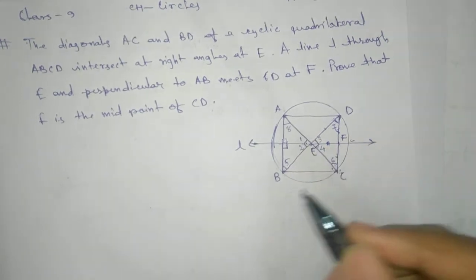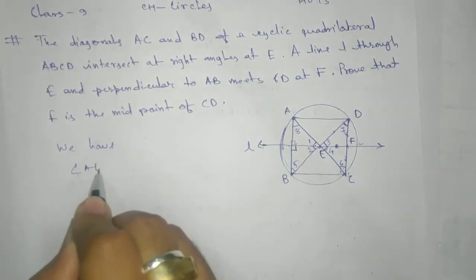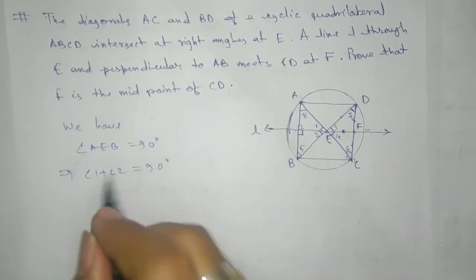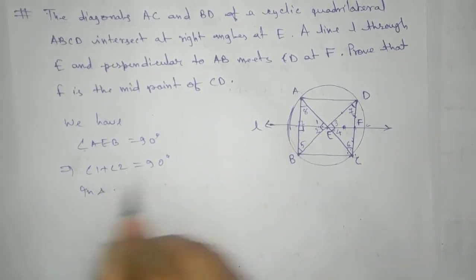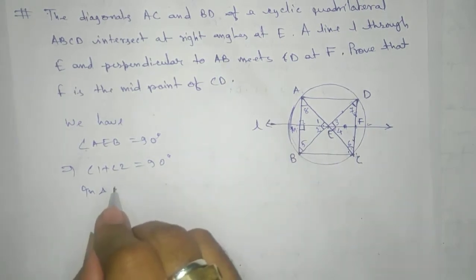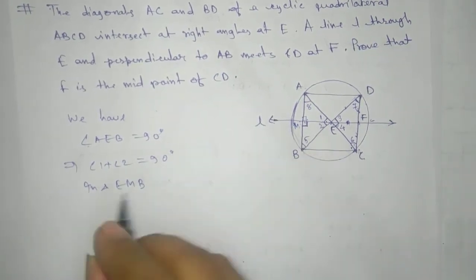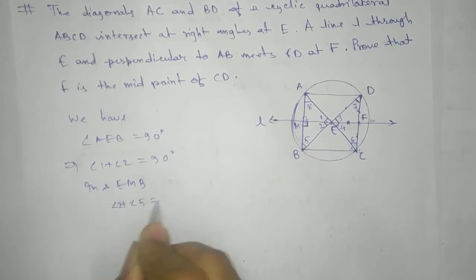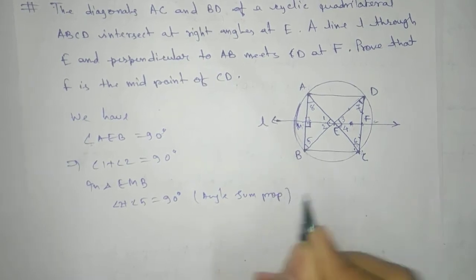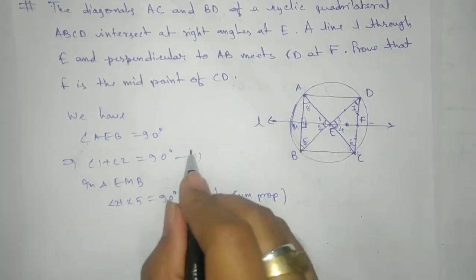We have angle AEB equals 90 degrees, which means angle 1 plus angle 2 equals 90 degrees. Next, in triangle EMB — if we give a name like M — in triangle EMB, there is a 90 degree angle here, which means angle 2 plus angle 5 equals 90 degrees, by the angle sum property of a triangle. Because this is 90, the other two must sum to 90 to get 180 degrees.